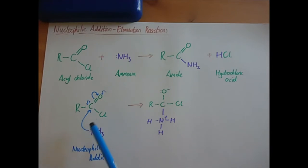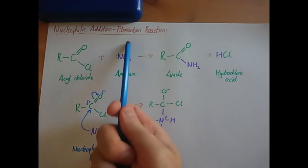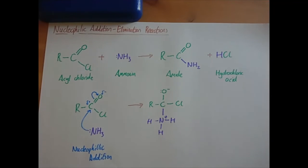All we're doing in this first stage is addition - we haven't produced anything else. That means the second stage is going to have to be elimination. So elimination is when you remove two of these substituent groups. What could we possibly remove?